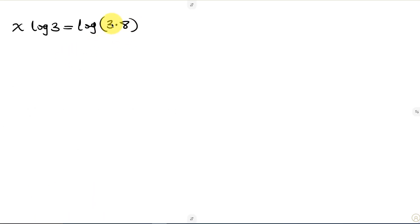And now looking at what we have here, this looks like this identity log a times b, which can be expressed as the log of a plus the log of b. So we can express this like this. So we have x log 3 to be equal to. Now this can be written as log 3 plus log 8.